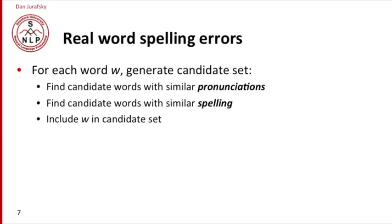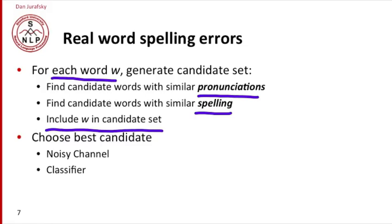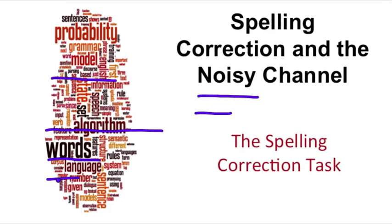For real-word spelling errors, the algorithm is quite similar. For each word we generate a candidate set, but now we do this for every word in the sentence, not just words that are not in some dictionary. In real-word spelling error correction we don't use a dictionary, because of course the errors are in a dictionary. We might find candidate words with similar pronunciations or similar spelling depending on the algorithm. Importantly, we include the word itself in the candidate set, because every word might be a misspelling of some other real word, or it might be the correct word — and in fact most words are probably correct. How we pick the best candidate: we might use the noisy channel model or a classifier. We'll discuss the different methods of detecting and correcting these errors in the next section.